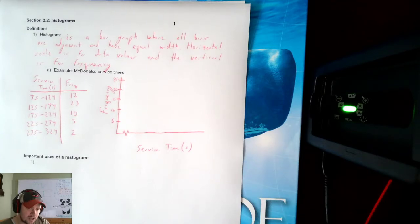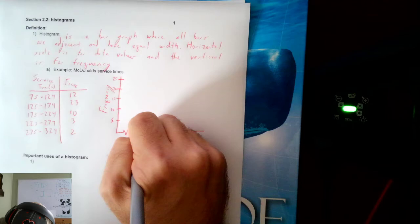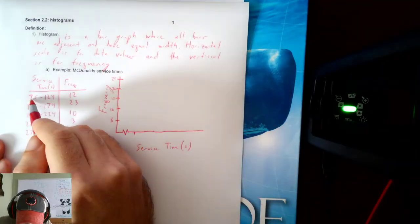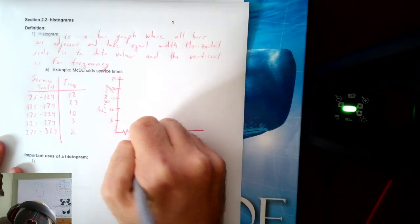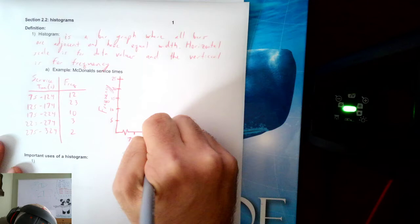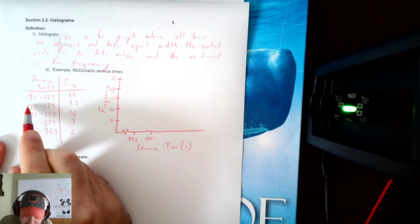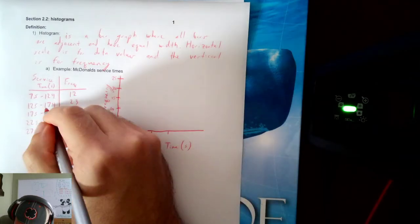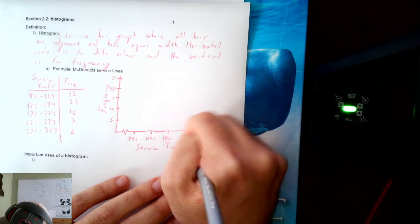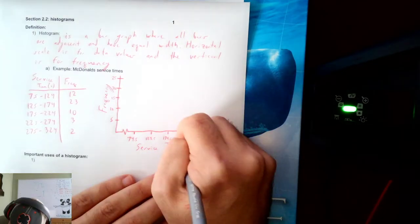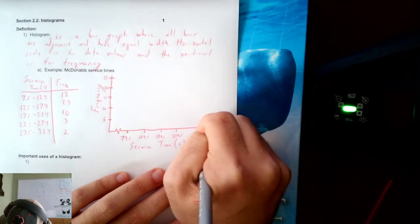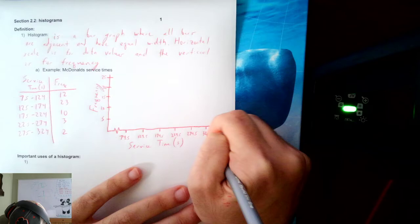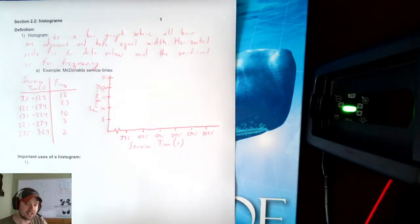Now, the horizontal scale, it's very important you label the horizontal scale correctly. The first dash, we start at 75. If you remember the class boundaries, though, the class boundary on the lower end was 74.5, and then on the upper end was 124.5. Remember, it's the number halfway between the classes. It's the class boundary. Those are the numbers that go here. After 124.5, the next boundary is 174.5, then 224.5, then 274.5, and then the last one would be 324.5.